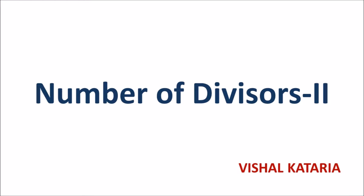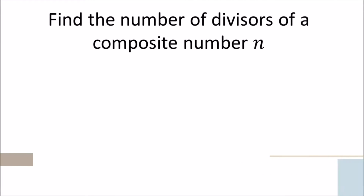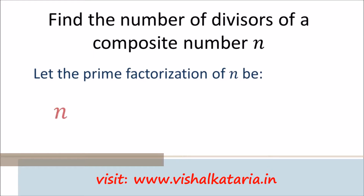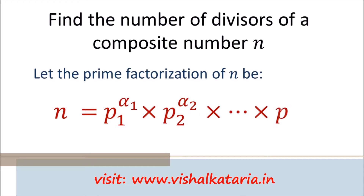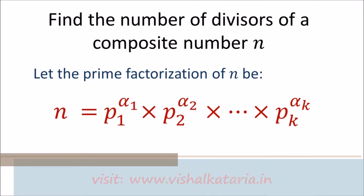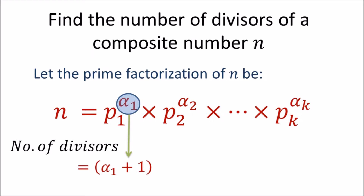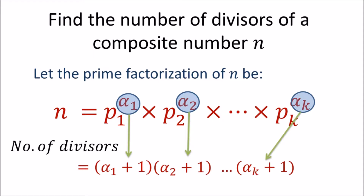Hi friends, this lecture is in continuation with the previous one in which I shared how to find the number of divisors. Suppose we have a composite number n. In order to find the number of divisors of n, we do the prime factorization of n: n equals p1 raised to power alpha1 times p2 raised to power alpha2, up to pk raised to power alpha k. To find the number of divisors, we multiply the powers after adding one to each: (alpha1 + 1)(alpha2 + 1)...(alpha k + 1). In this lecture I am going to give the justification for why this method works.